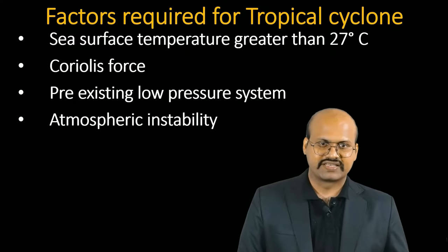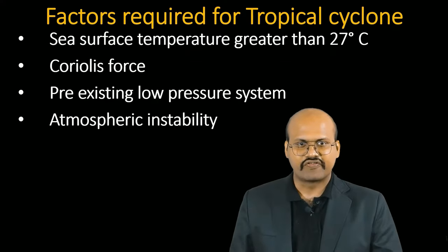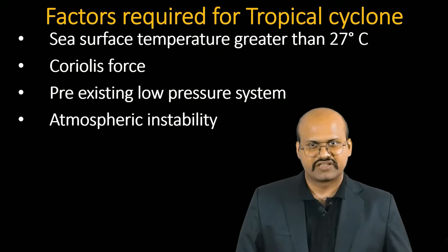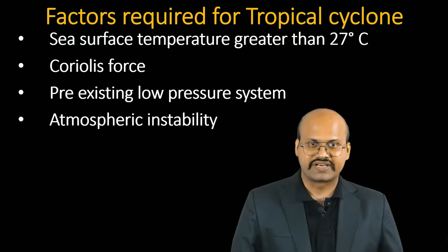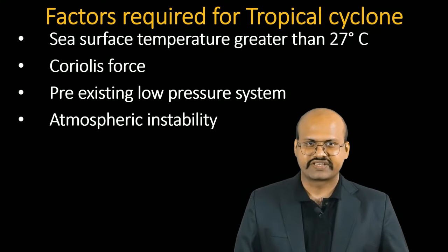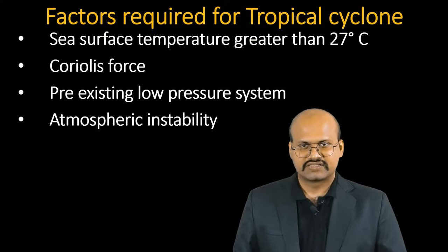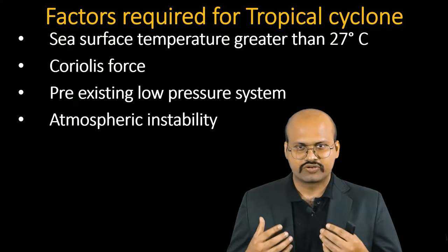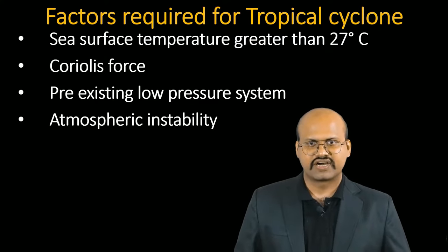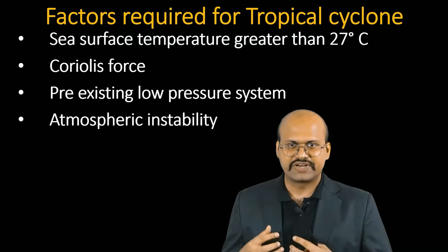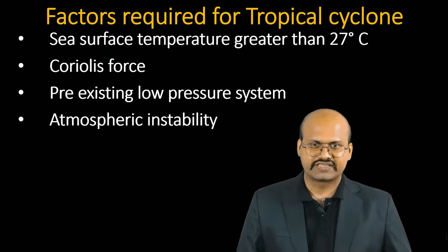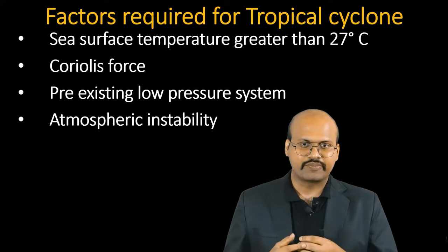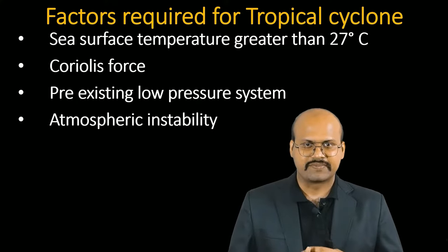Now let's see what factors are essential for the formation of tropical cyclones. The first is that sea surface temperature should be greater than 27 degrees Celsius. Second, there should be a Coriolis force. The third is a pre-existing low pressure system, and the fourth is that there should be atmospheric instability present.